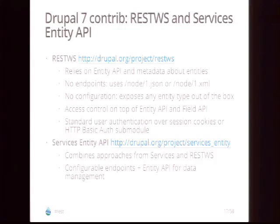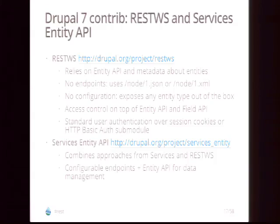I also built the REST WS module in Drupal 7 because I wanted something different. It uses the Entity API, which gives you metadata about any entity type in your system. With REST WS, you can expose basically any entity in Drupal 7. It's not perfect because of page caching issues — the page cache only works on a URI, but with RESTfulness you also need to vary on other HTTP headers like content-type. There's also the Services Entity API module which brings the full power of the Entity API to the Services module.